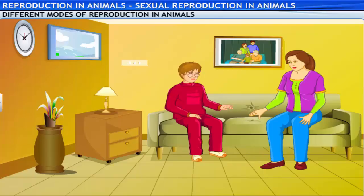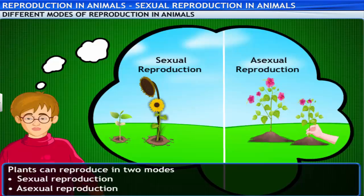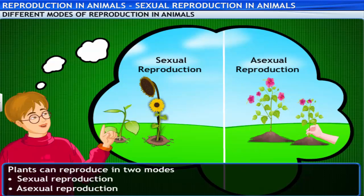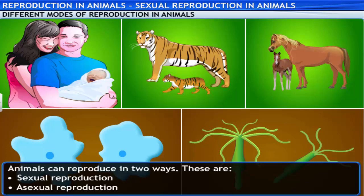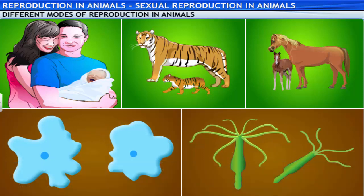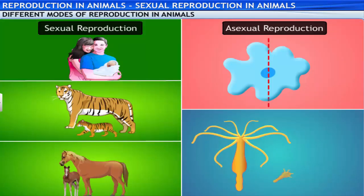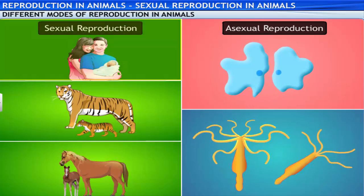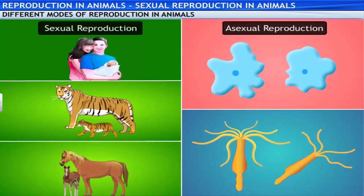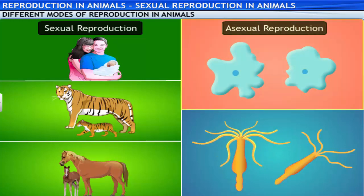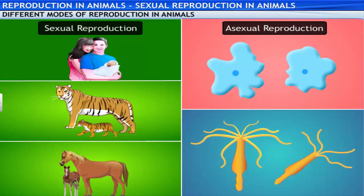You've been studying about reproduction in plants at school, haven't you? Yes, of course. Plants can reproduce in two modes — sexually and asexually. Well, animals can also reproduce by either sexual or asexual mode. For example, human beings and animals such as tigers and horses reproduce by sexual mode, whereas simple organisms such as amoeba and hydra adopt asexual mode of reproduction.